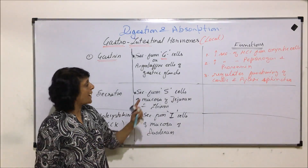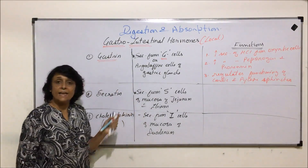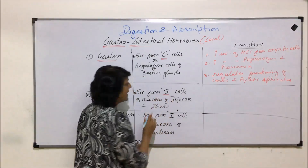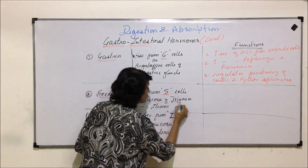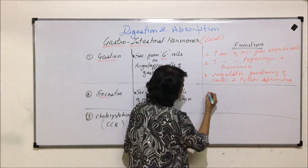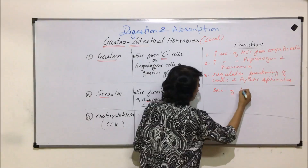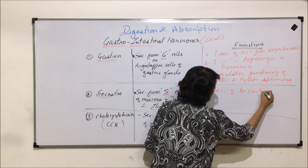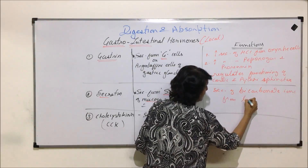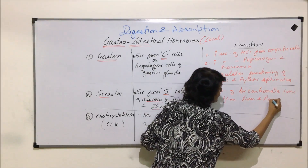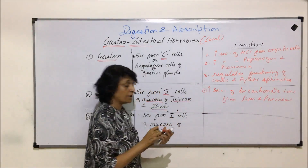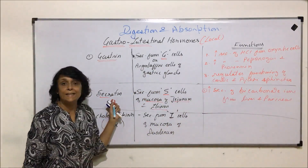The second hormone is secretin, and it is secreted by S-cells which are found in the mucosa of the jejunum and ileum. This hormone is responsible for increasing the secretion of bicarbonate ions from the liver and pancreas.